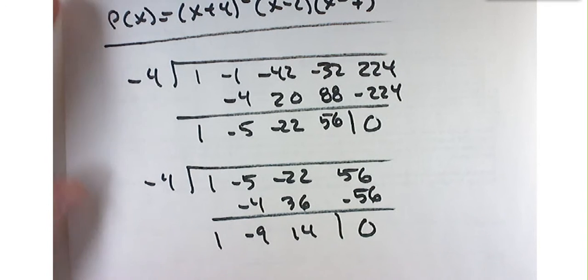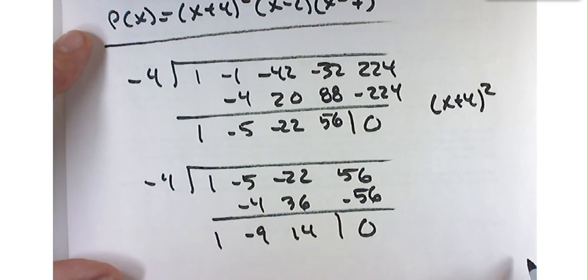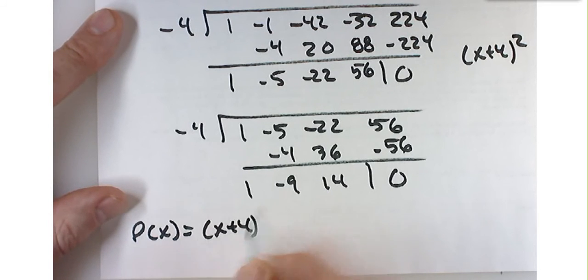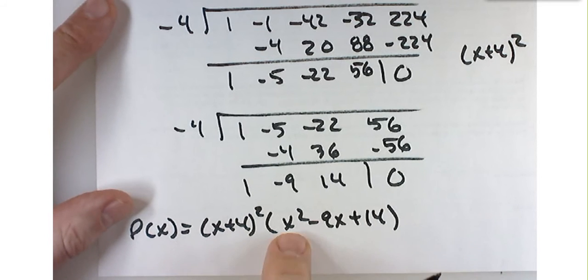So I got the x plus 4 out twice, so what I've gotten so far is p of x is x plus 4 times x plus 4, or x plus 4 squared times x squared minus 9x plus 14. And at this point, you can use a quadratic formula.